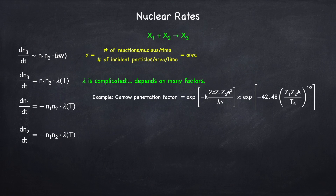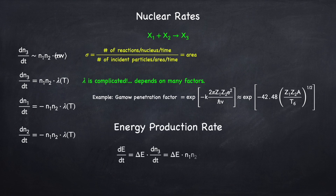Now every time you have a nuclear reaction, you release some binding energy. The rate at which energy is released is just the rate at which particle X3 is produced times the energy produced per reaction, which I've called delta E.